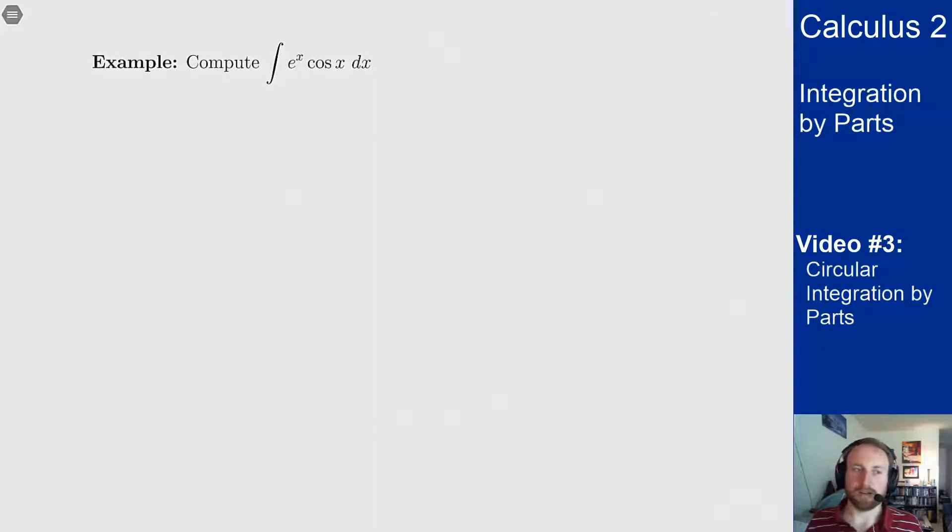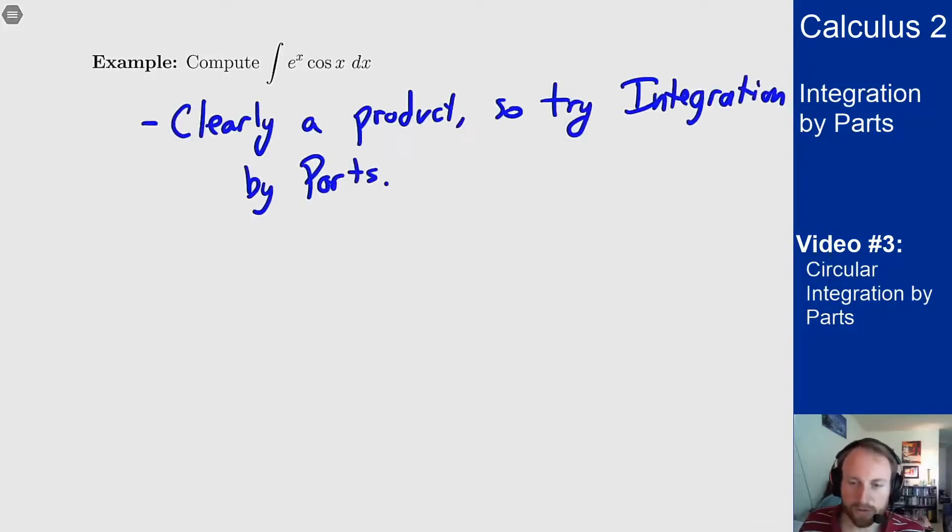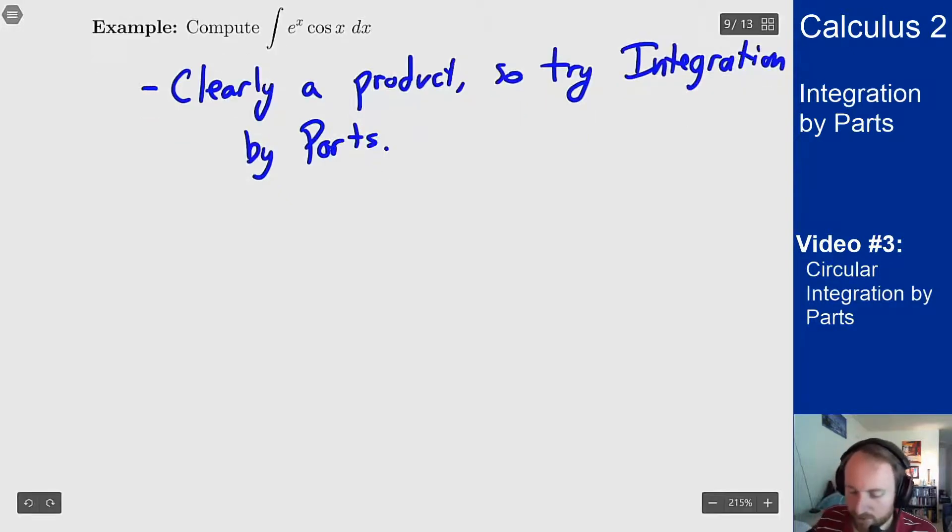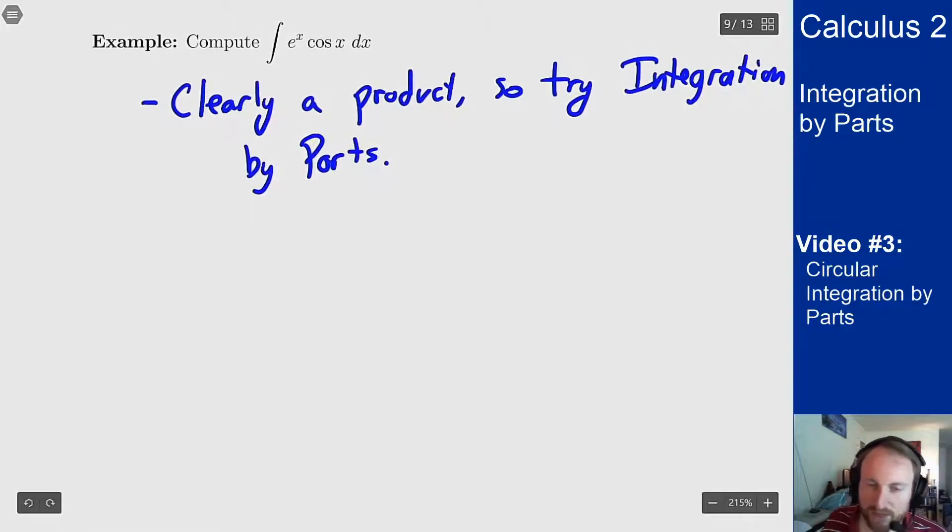So the main example to talk about here is one like this: e to the x times cosine x. This is clearly a product so it should definitely be an integration by parts problem. Let's go through our rules here. Well I don't see any inverse trig or any logs, I don't see any polynomials. All I see are exponentials and trig. So I'm allowed to pick whichever way I want for this problem. I'm going to pick u to be my e to the x term and then dv to be cosine of x dx.